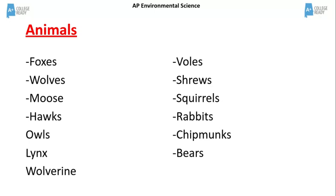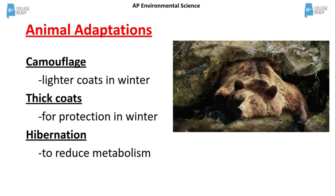There are a variety of animals found in the taiga, including foxes, moose, owls, squirrels, chipmunks, and bears. Animal adaptations to the conditions in this biome include camouflage, thick coats, and hibernation.